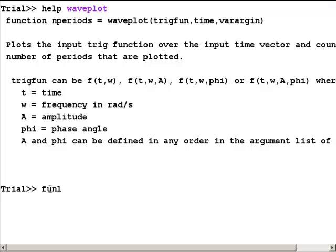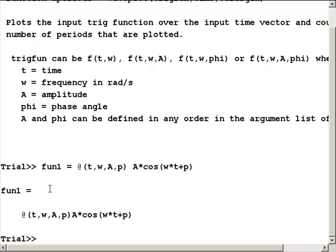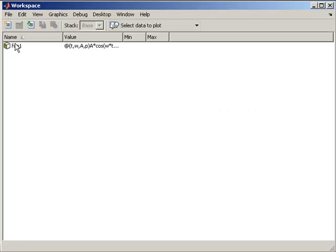The syntax would be something like fun1 equals at, and this is where we define the input variables to this function. So, we want t, w, A, and p will be our inputs, and this will just be a basic cosine function, so amplitude times cosine of omega times t plus p, where p is the phase angle. There's our anonymous function that we defined, and we can go over and look in the workspace, and we see now we have a function in our workspace. To date, we've been looking at variables in our workspace, but now we have a function in our workspace.